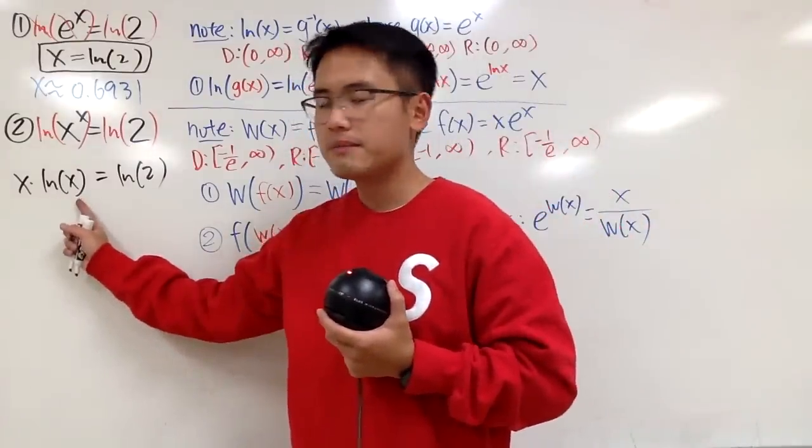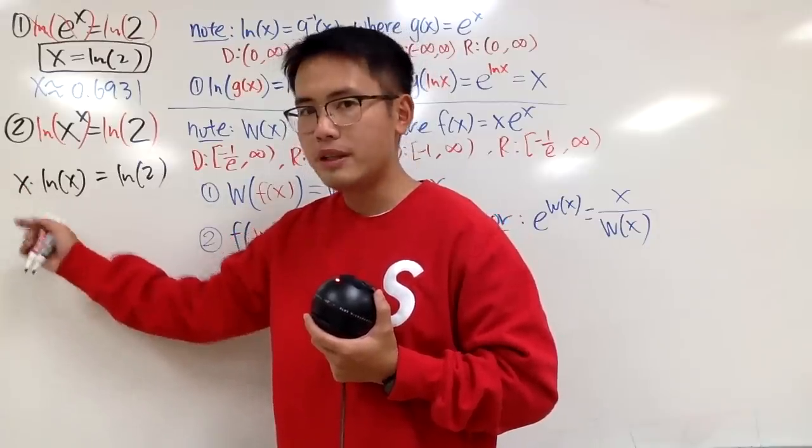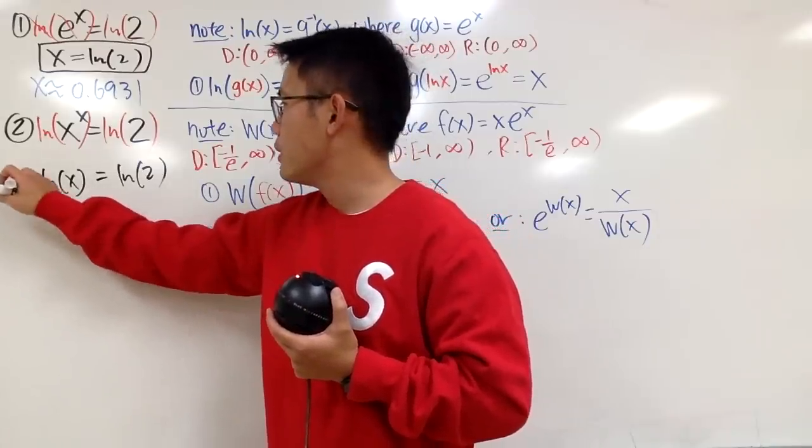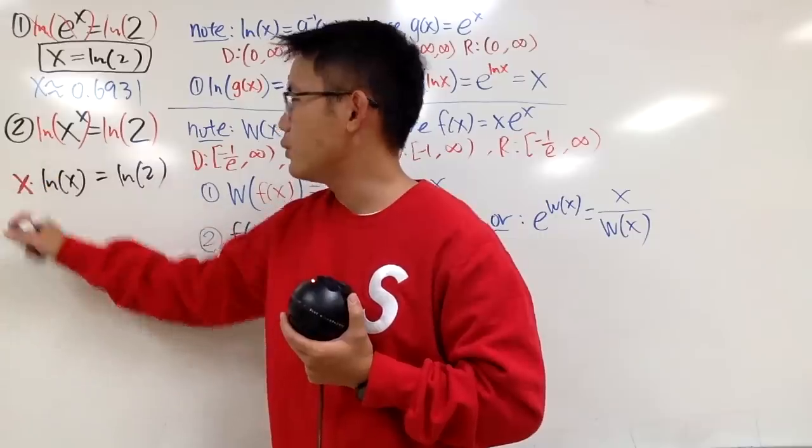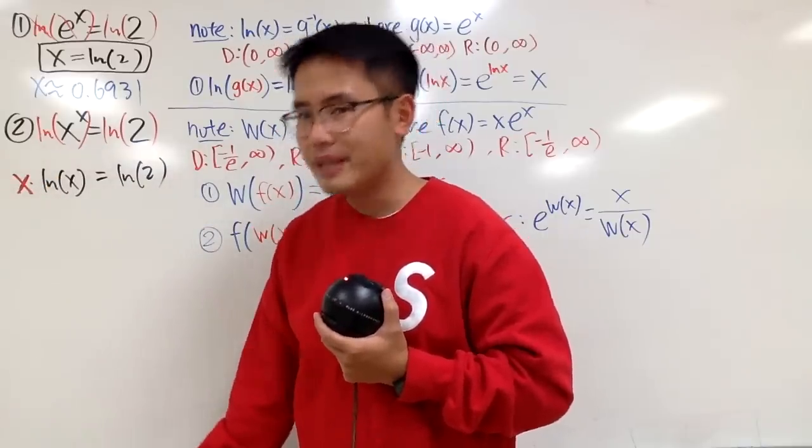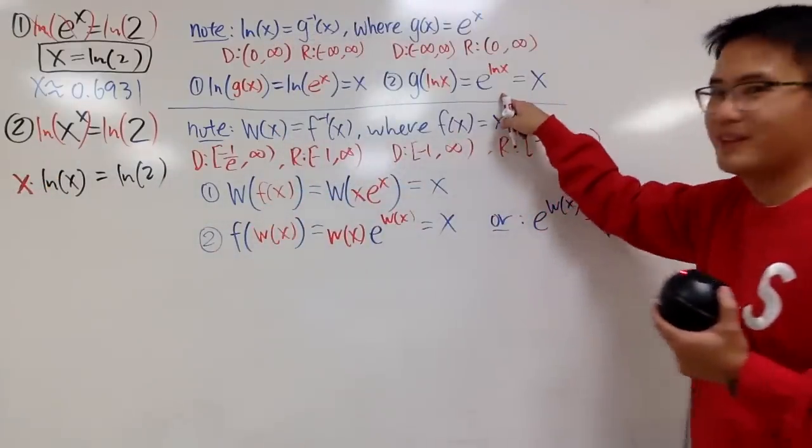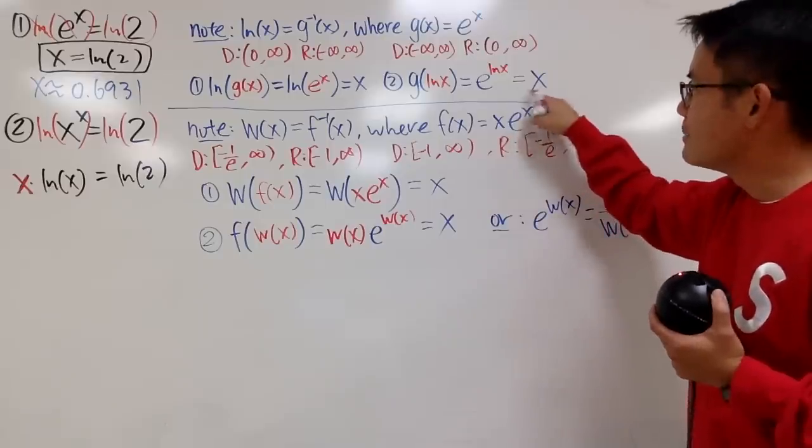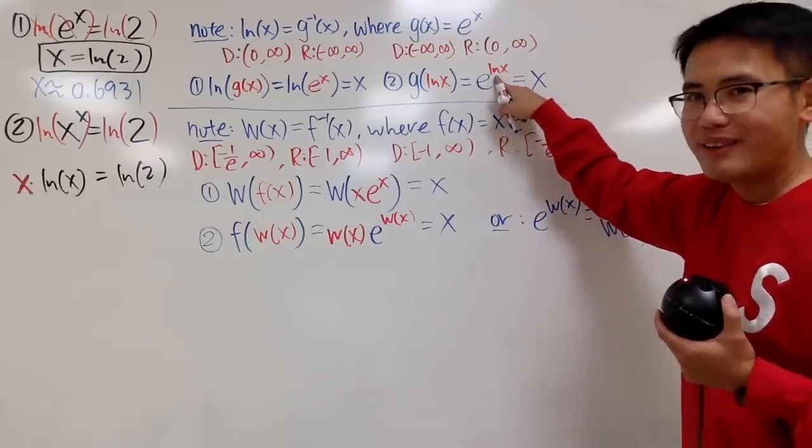Well, this is ln of x times x, and look at what this x is. Hmm, can I invite e to be here? Yes, because I actually have it here. x is the same as e to the ln x power.